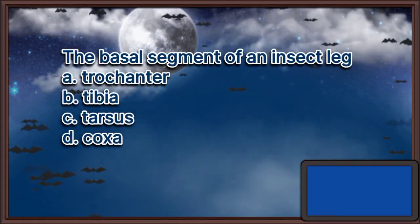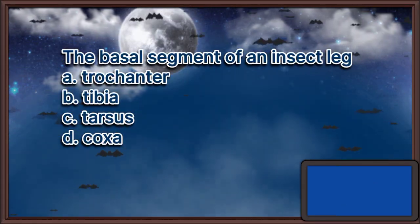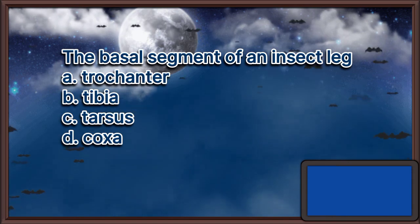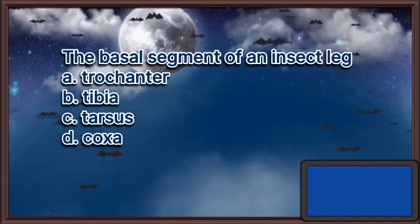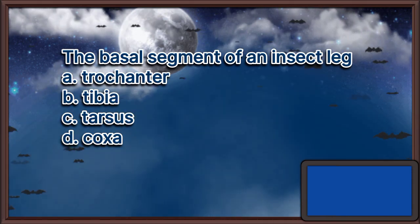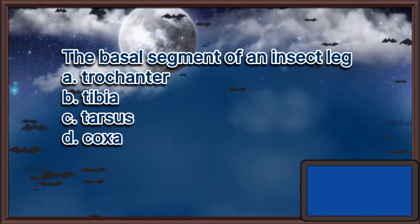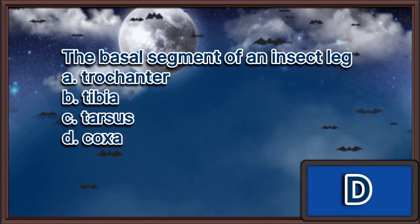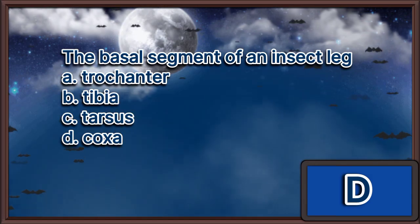The basal segment of an insect leg. A. Trochanter. B. Tibia. C. Tarsus. D. Coxa. The answer is letter D.